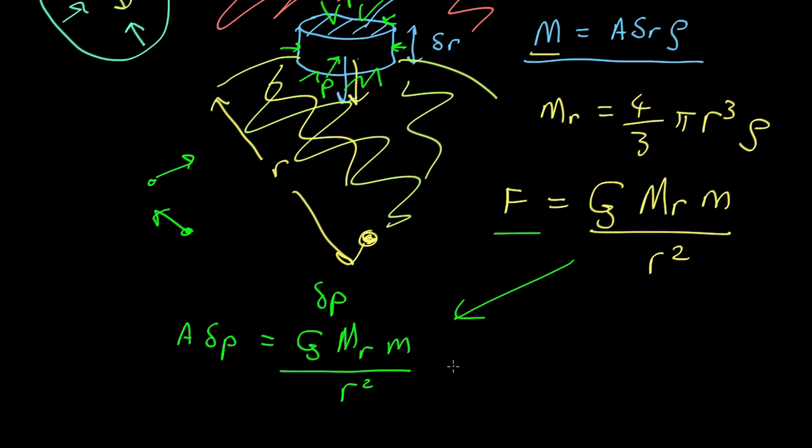Now, we know what M_R is. So we can substitute that in and get G over R squared times 4 thirds pi R cubed times the density. That's M_R. Now, what's this m here? That's given up here. So that's A delta R rho.